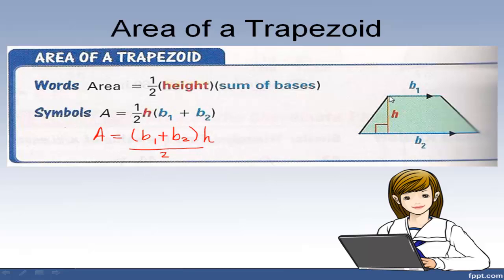Notice the height is a segment from the vertex, and that segment is perpendicular to the opposite side of that vertex — that would be your height. I can also draw this height outside by extending the base, and that would still be my height. Either way works.